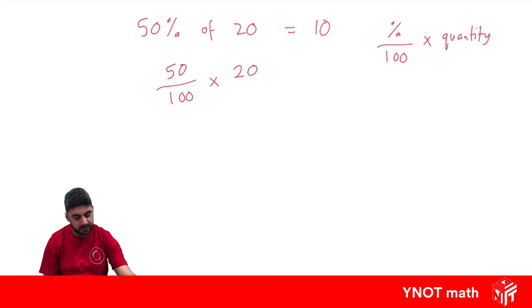To make things a little easier, you could put it over 1. Let's times across now, numerator and numerator. So 50 times 20 is actually going to be 1000, and 100 times 1 is going to be 100. And 1000 divided by 100 is just 10.